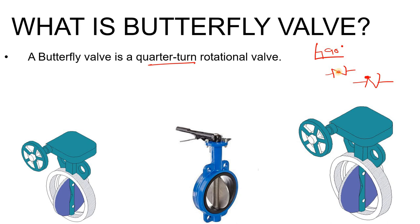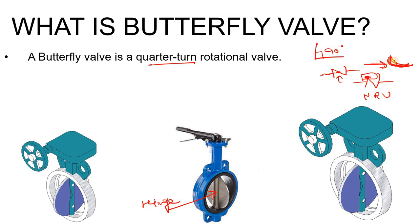If you compare it with the P&ID symbol of the check valve, the dotted line placement is different. In the butterfly valve the hinge is at the center, whereas in the NRV (non-return valve) the hinge is at the top — it operates like a flapper type, opening when pressure is applied. You can check our videos about NRV where we have explained many types.